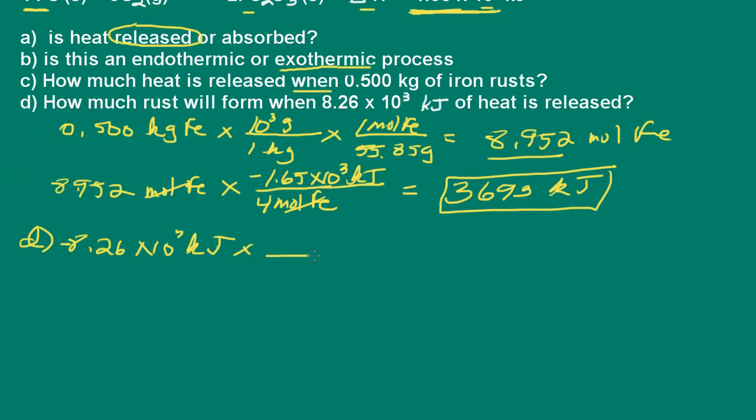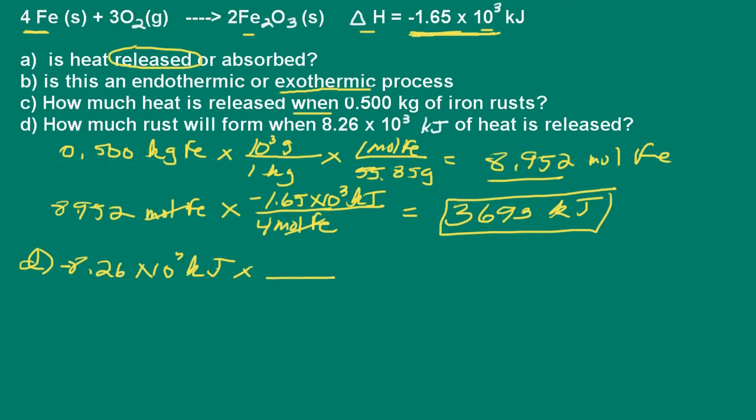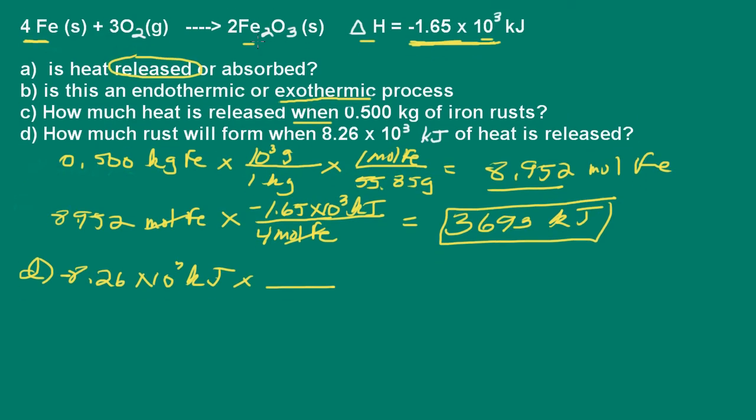And we know from our equation, and let's go back up here and take a look at that, that 2 moles of iron 3 oxide or rust are produced when 1.65 times 10 to the third kilojoules of heat is released. So let's use the balanced chemical equation here. So we have 2 moles of iron 3 oxide are produced when 1.65 times 10 to the third kilojoules of heat is released.